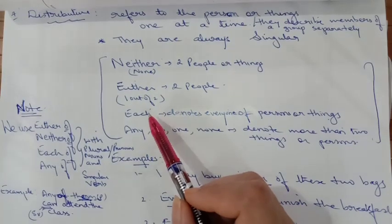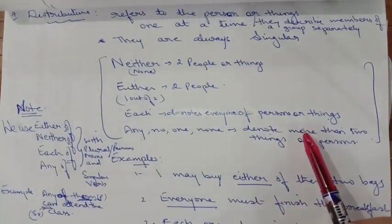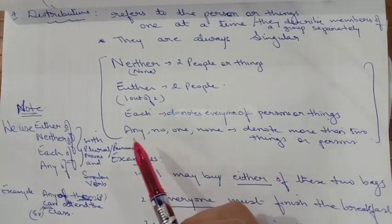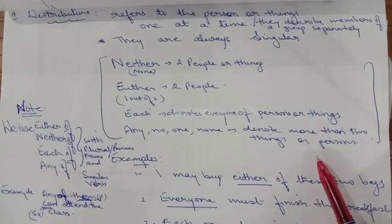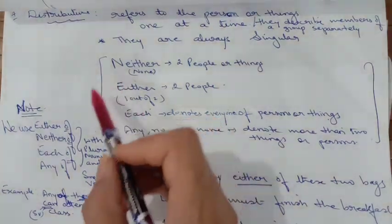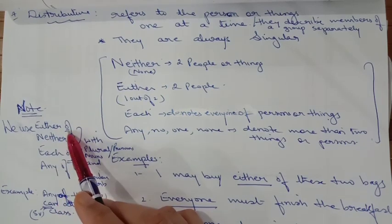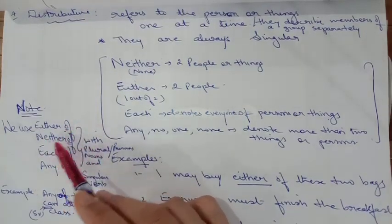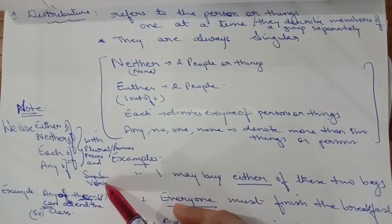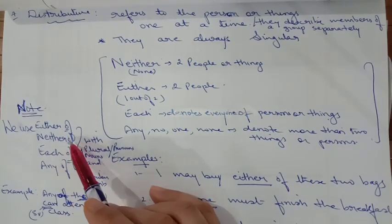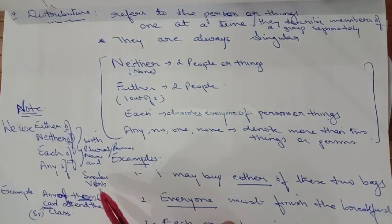Either you go or you go. Neither you will get nor he. 'Each' denotes every one of a person or thing — each one of you has to do this work. 'Any,' 'no,' 'one,' 'none' denote more than two persons or things. Kindly note: we use 'either of,' 'neither of,' 'each of,' 'any of' with plural pronouns or nouns and a singular verb.